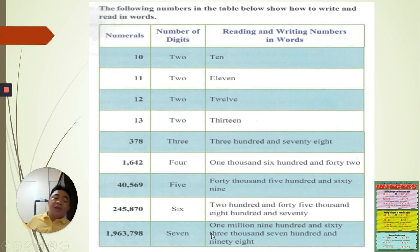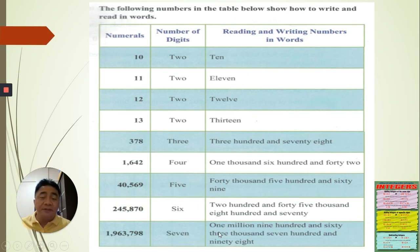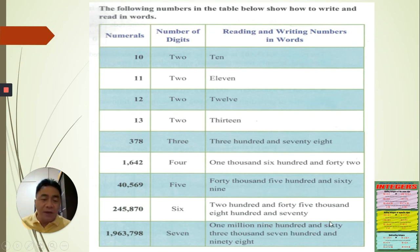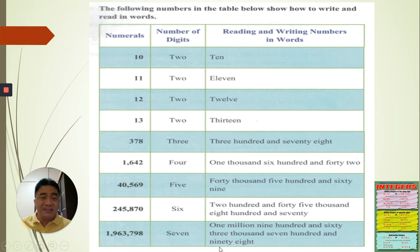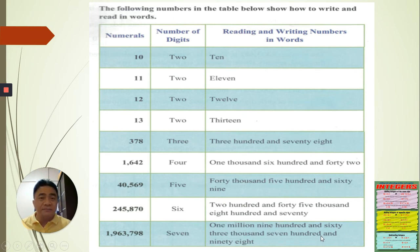To read a number correctly — like in the last example — after the millions and after the hundreds place, you add the word 'and.' Then you read the thousands. Then before you read the tens place, you add 'and' again. For example: one million, nine hundred and sixty-three thousand, and seven hundred and ninety-eight. Did you understand? Okay, now we have an activity.